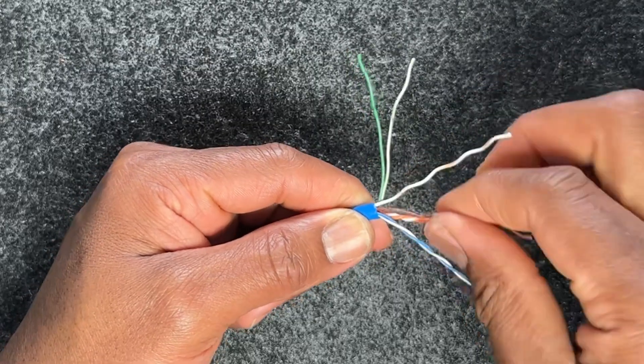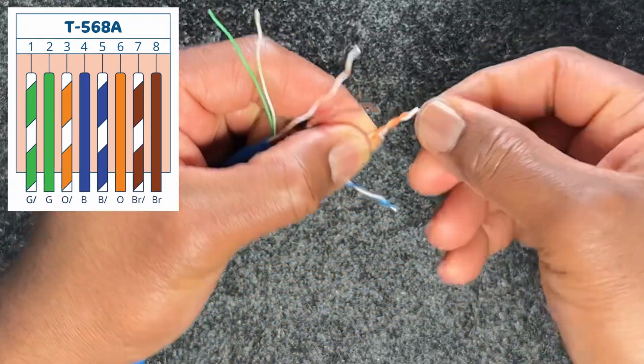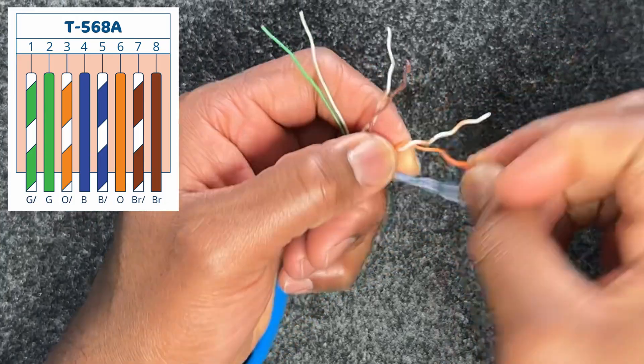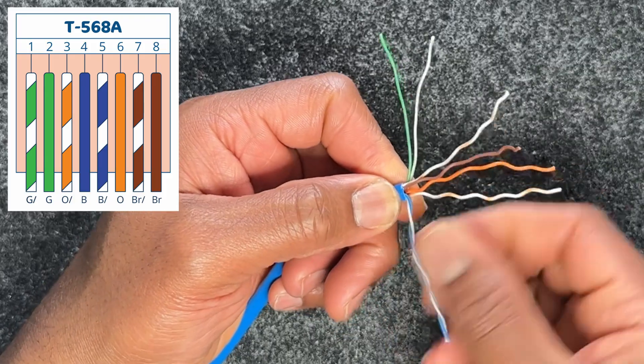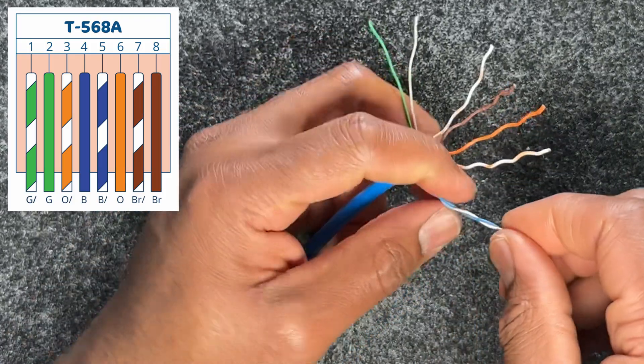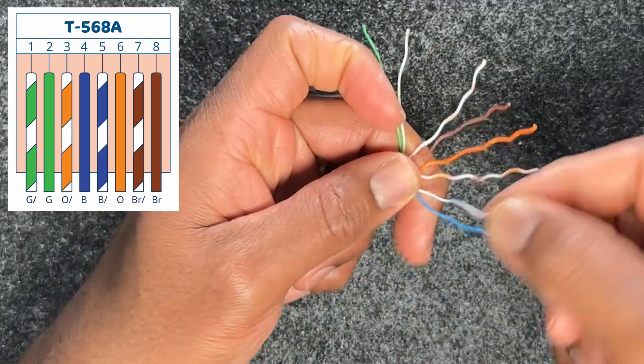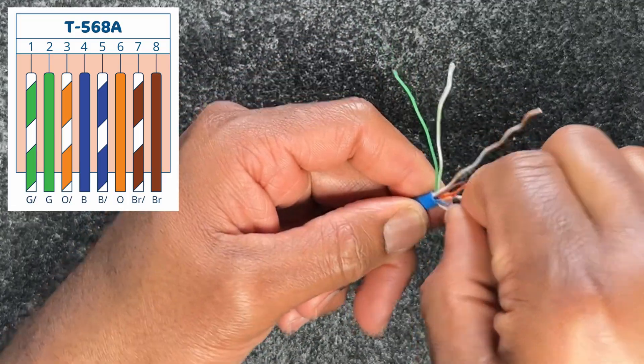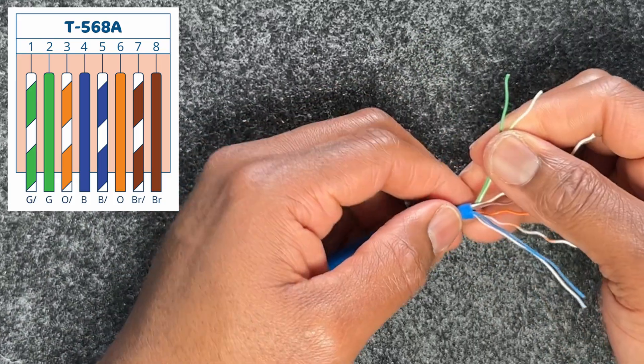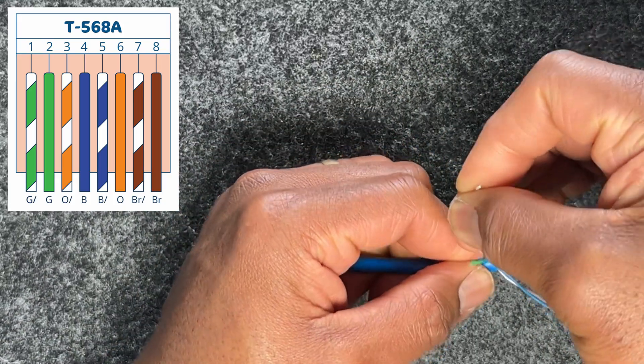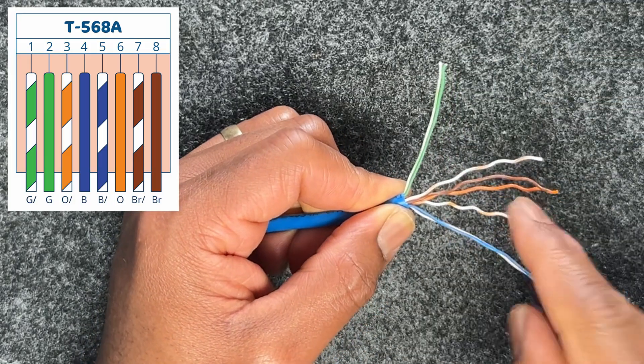This side I'm doing first will be the 568A. With 568A, pin one is white green, pin two is solid green, pin three is white orange, pin four solid blue, pin five white blue, pin six solid orange, pin seven white brown, pin eight solid brown. However, when I do the opposite end, I'll flip the green and the orange.